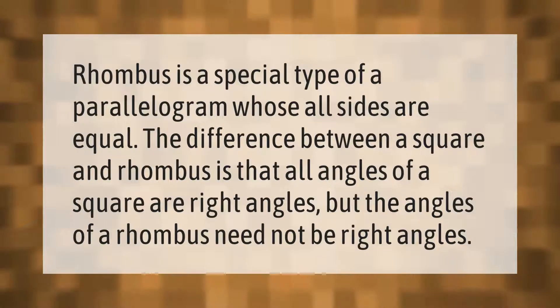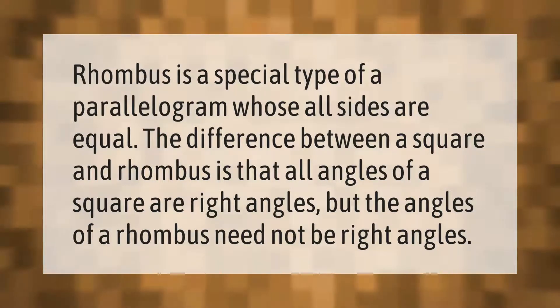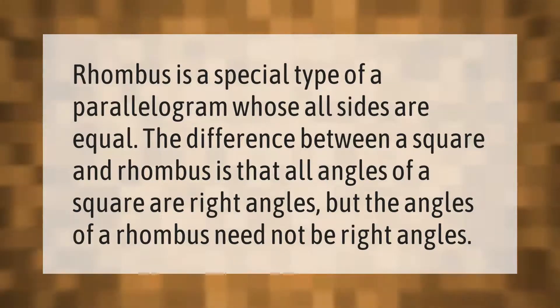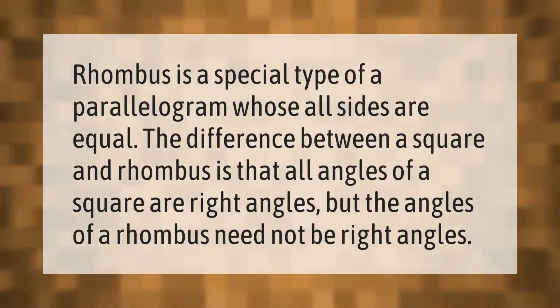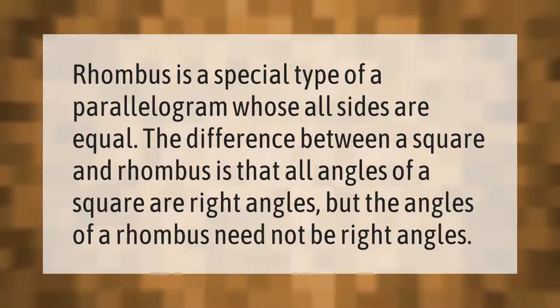A rhombus is a special type of parallelogram whose all sides are equal. The difference between a square and a rhombus is that all angles of a square are right angles, but the angles of a rhombus need not be right angles.